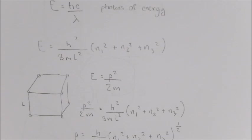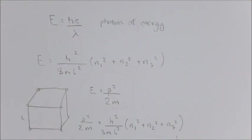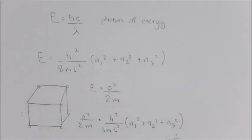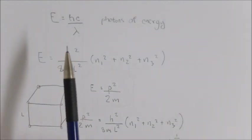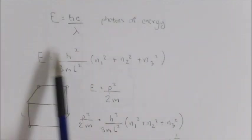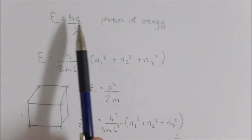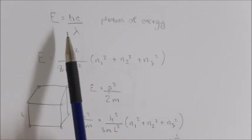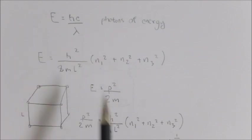Now, in order to start this problem, we need to first think of electromagnetic radiation in terms of quantum theory. We need to think of electromagnetic radiation as photons of energy using this formula: E equals hc over lambda, where h is Planck's constant, c is the speed of light, and lambda is the wavelength.